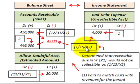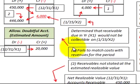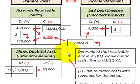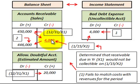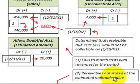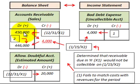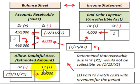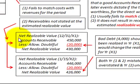Notice that the direct write-off method did not affect our allowance account at all. It fails in two ways: number one, it fails to match costs with revenues for the period — we had revenues in X1 for that $4,000 amount, but we didn't recognize the expense until the second year. Number two, the receivables are not stated at the estimated realizable value. We had receivables of $450,000 and an allowance for doubtful accounts of $20,000 at 12/31/X1, and the difference represents the net realizable amount.